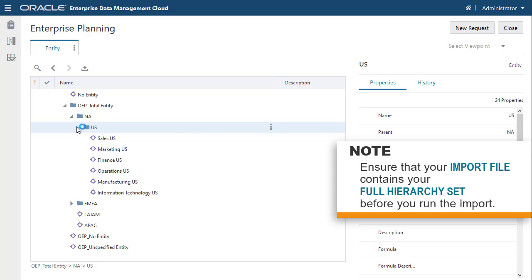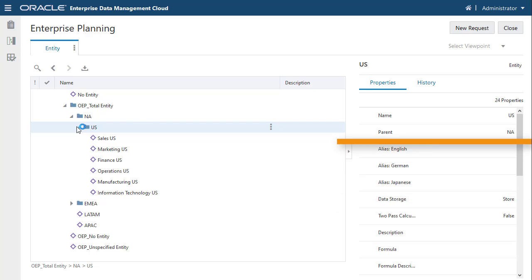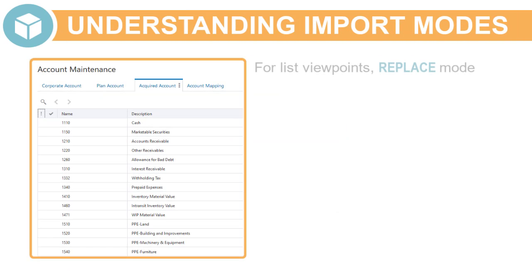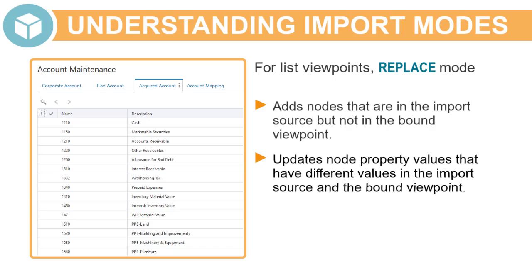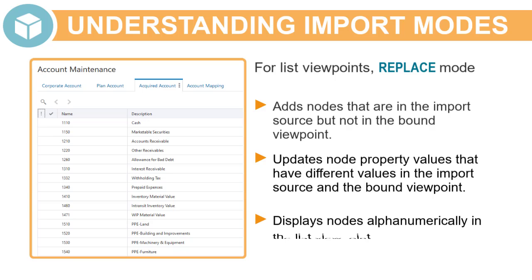Note: ensure that your import file contains your full hierarchy set before you run the import. For list viewpoint updates, the Replace import mode adds nodes that are in the import source but not in the bound viewpoint, updates node property values that have different values in the import source and the bound viewpoint, and displays nodes alphanumerically in the list viewpoint.